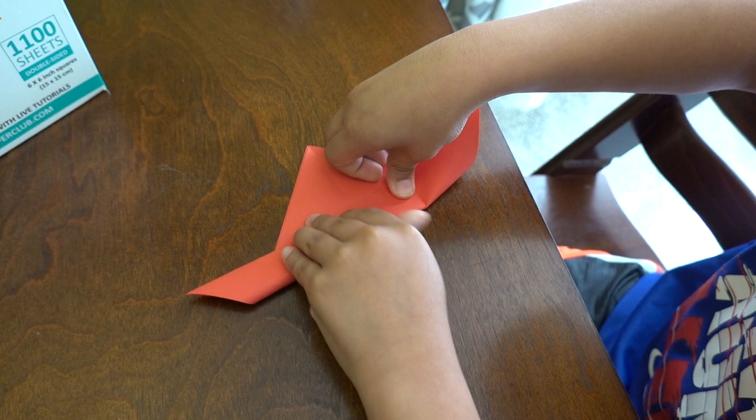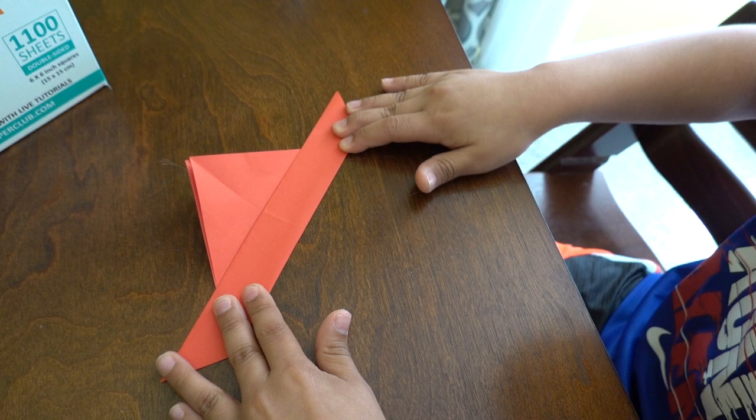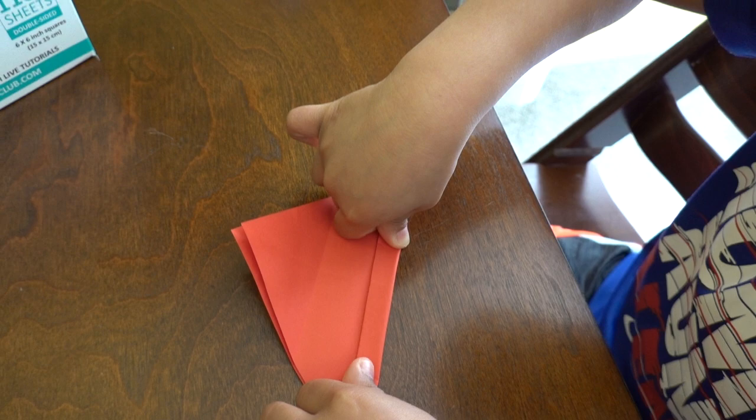Then for this, you have to fold this edge to here like that, and crease. Then you have another line. You have to fold to that line.